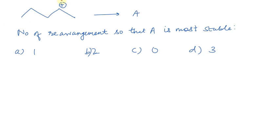Next question: we have been given a compound A and asked how many rearrangements will give the most stable carbocation. Options are 1, 2, 3, 4. Take one minute. I hope you have tried this. The answer is C. No rearrangement will happen here. Counting alpha hydrogens: on one side there are 3, on the other side there are 2, giving this structure 5 alpha hydrogens.